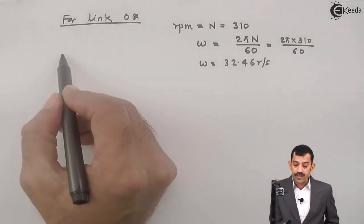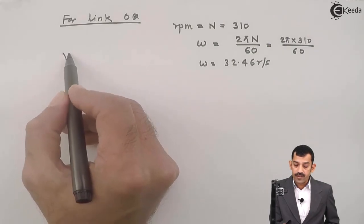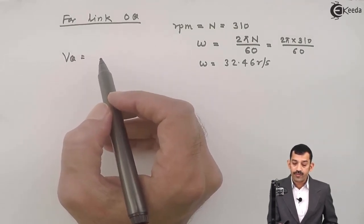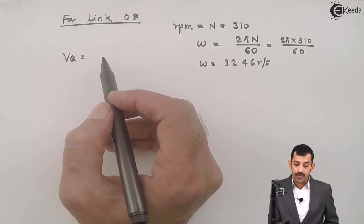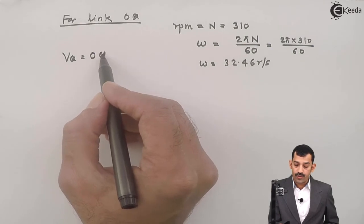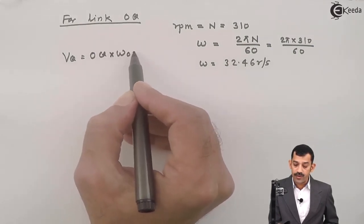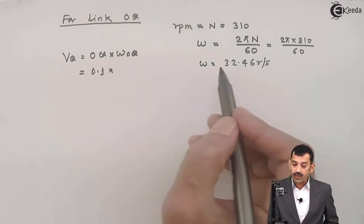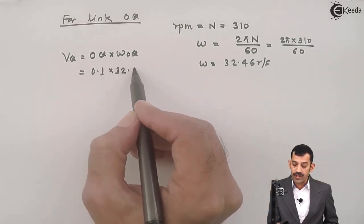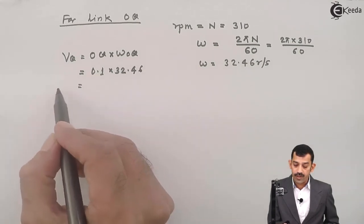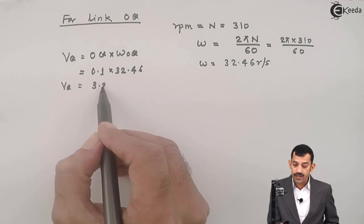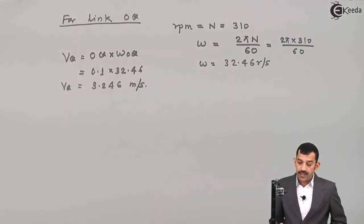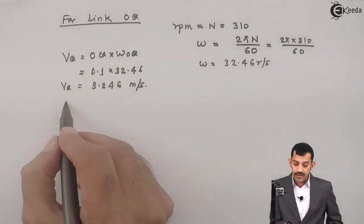Since omega is known for link OQ, we apply the equation for point Q. VQ equals the radius of rotation (distance of Q from O) times omega OQ. Therefore VQ = OQ × omega OQ = 0.1 m × 32.46 = 3.246 meters per second.